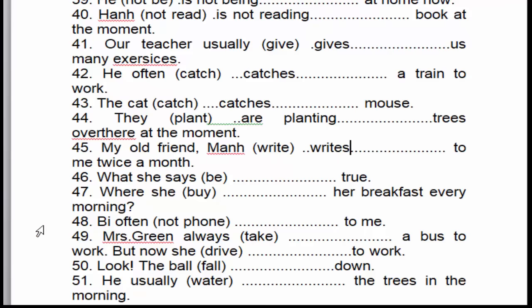Câu số 46: 'What someone says is the truth.' Cái điều của ai đó nói là sự thật. Cái chủ ngữ đó là số ít, chúng ta không nhận ra cái điều gì cụ thể. Vậy cái chữ 'say' này sẽ chia theo số ít → 'says'.